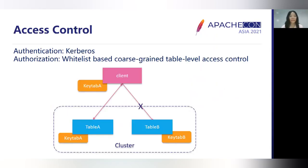We also support access control. Like Hadoop systems, we use Kerberos for authentication. When the cluster enables access control, the client must have the appropriate key type files. PEXUS now supports whitelist-based table-level access control. As the diagram shows, a client can only access table A but cannot access table B.